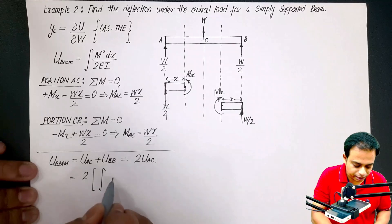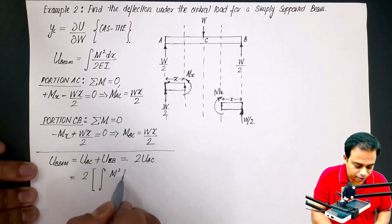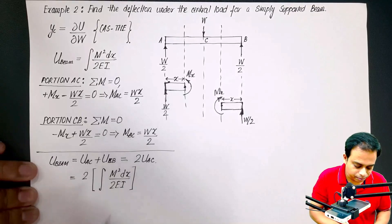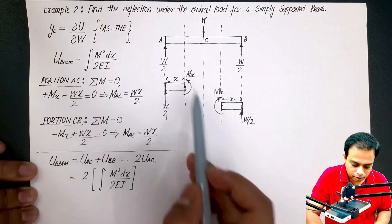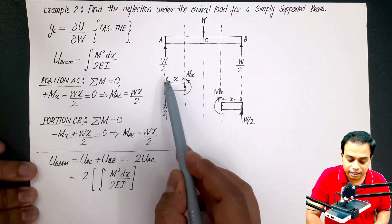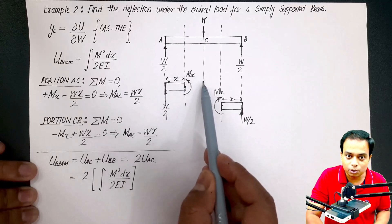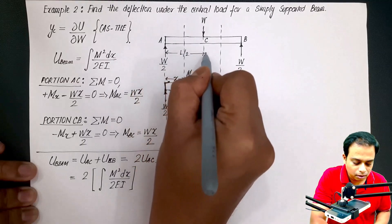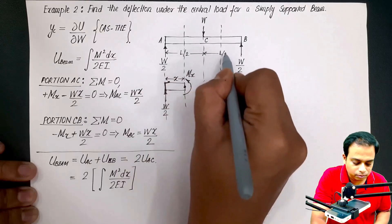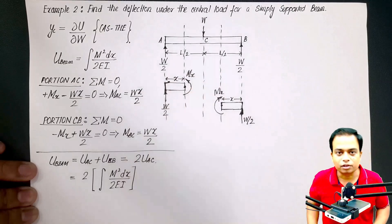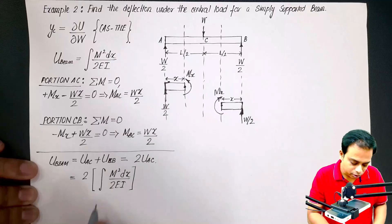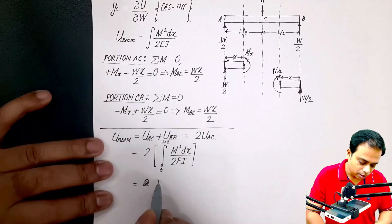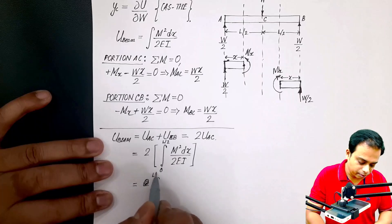Okay, now how to approach? Now what we will do is U_beam, let me start, two times of U_AC. So what is U_AC, sir? It can be written this way: M squared dx upon 2EI. Isn't it? And for AC, x is equal to 0 starting at A, and at C, x is equal to L over 2.